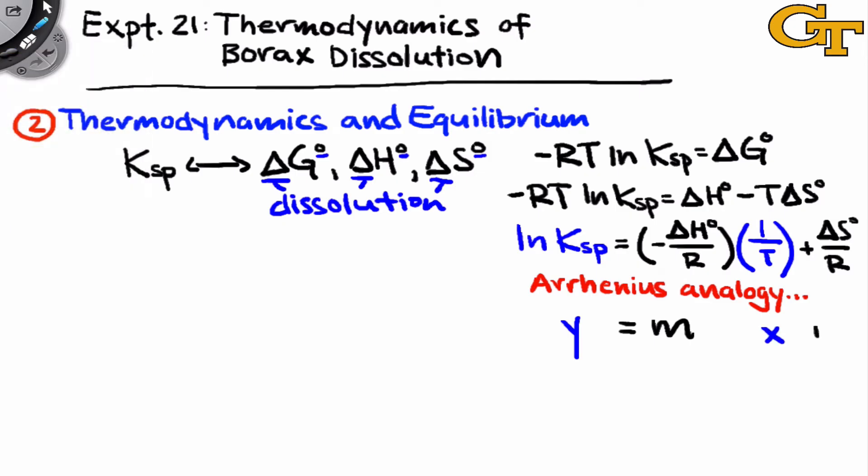Y equals MX plus B, where the slope is negative delta H over R, and the Y-intercept is delta S over R. So let's look at this graphically.